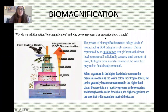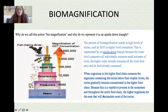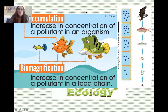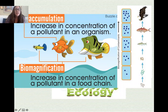Why do we call this biomagnification and why represent it with an upside-down triangle? The process of biomagnification results in high levels of toxins such as DDT in higher-level consumers. This is represented by an upside-down triangle because lower-level consumers individually consume small amounts of toxin, while higher-order animals consume all the toxin their prey and its food already consumed. As you go up the food chain, the magnification — like a magnifying glass making things bigger — increases.